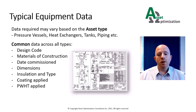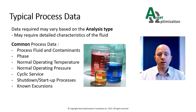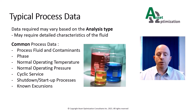Equipment data is typically collected by the inspection specialist, such as an inspector or an engineer. Common process data includes the fluid, any contamination contained within the fluid, the phase, start-up and shutdown considerations, whether it is in cyclic service or operates intermittently, any issues around shutting down or starting up, and any known excursions beyond the safe operating limits. Process data is typically collected by the unit process engineer or process specialist.